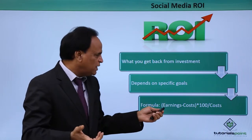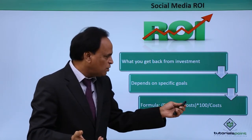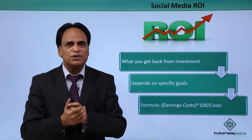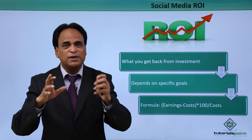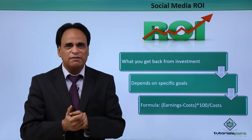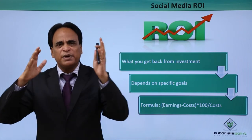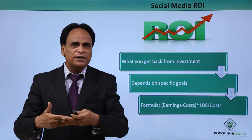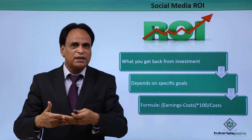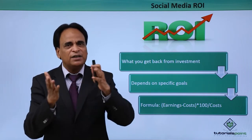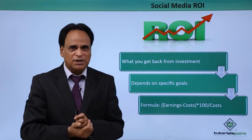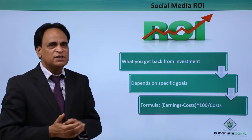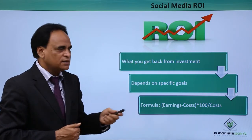The ROI formula is very simple: earnings minus cost, multiplied by 100, divided by the cost. That is basically the social media return on investment formula. You are spending a certain amount of money and measuring what you are getting in terms of achieving your goals and objectives.